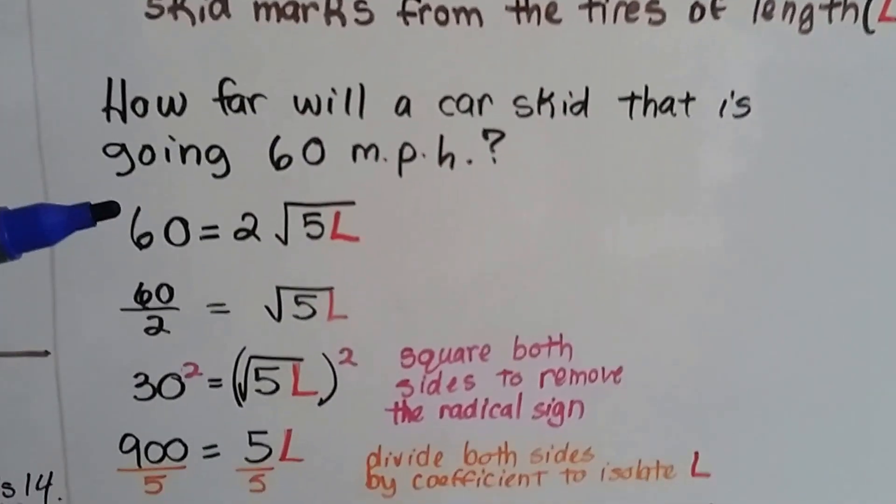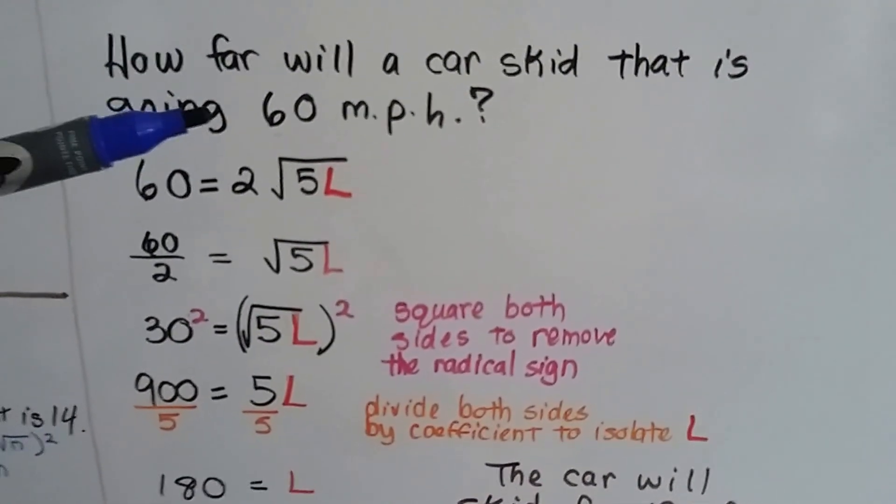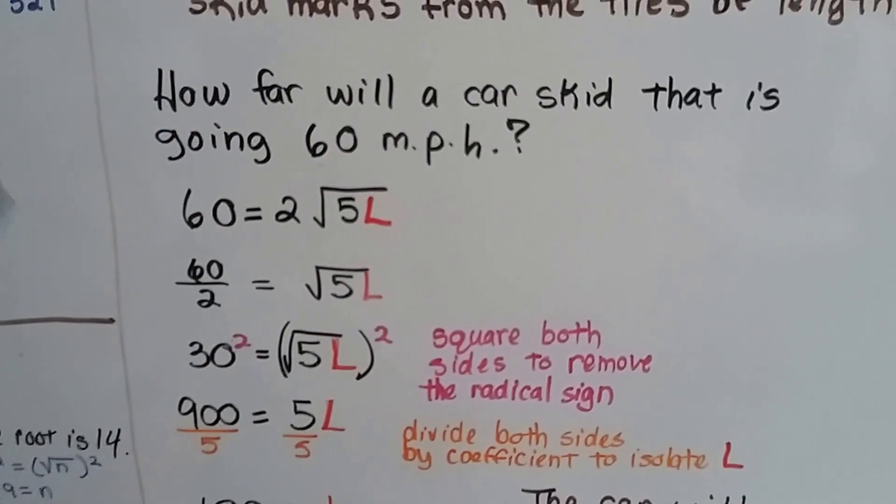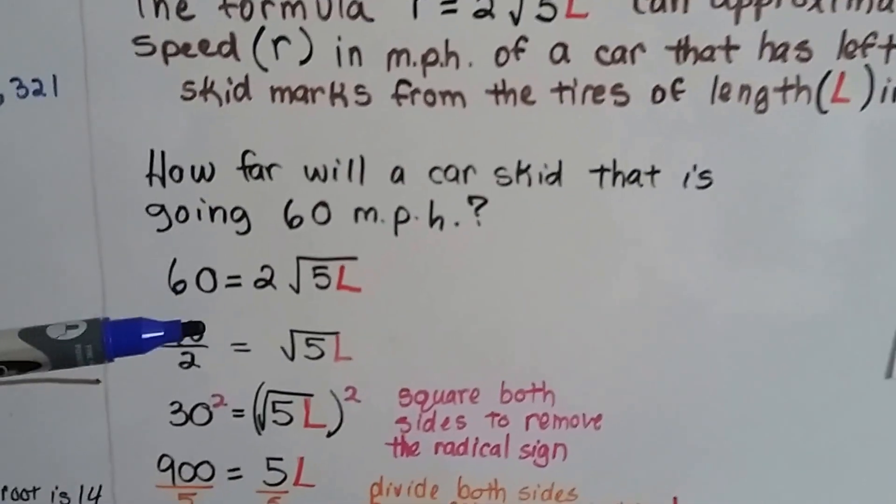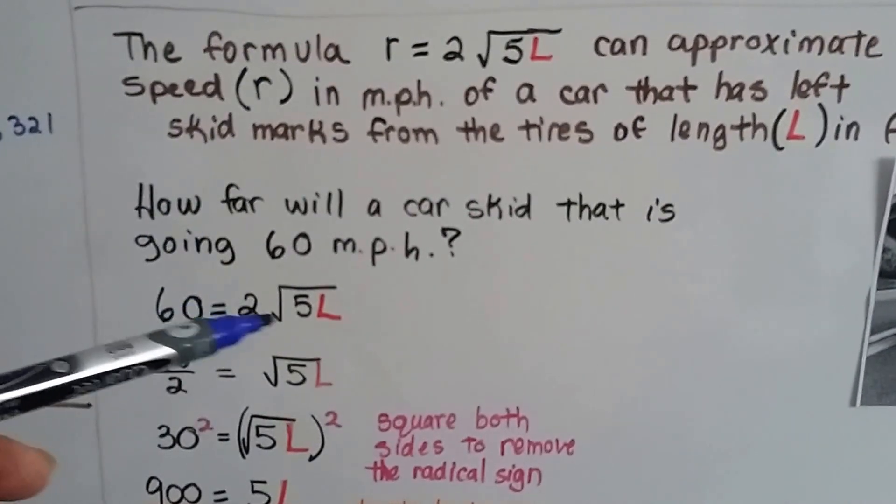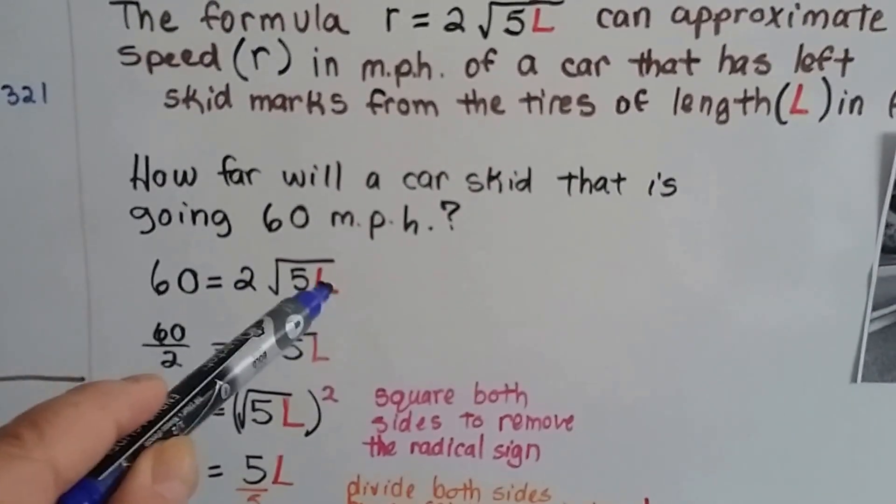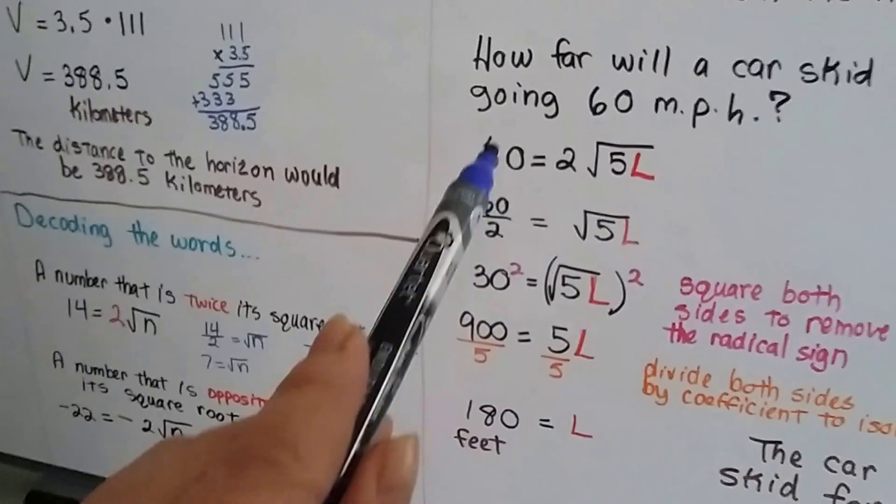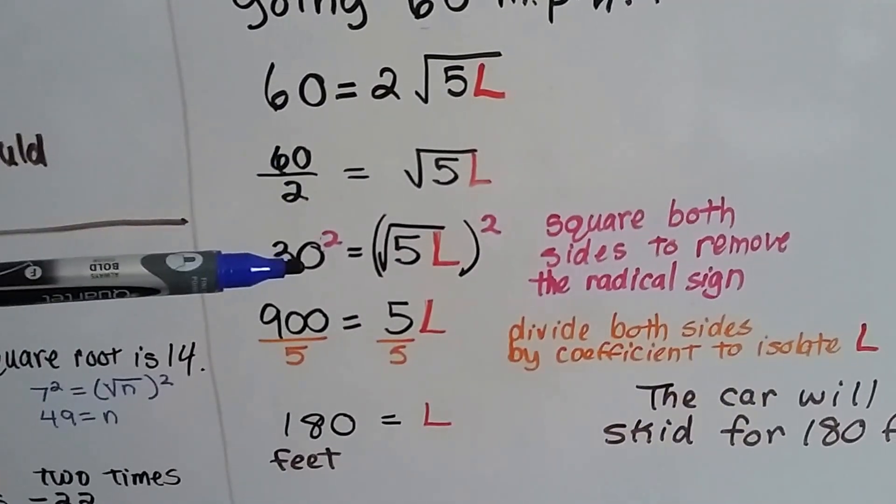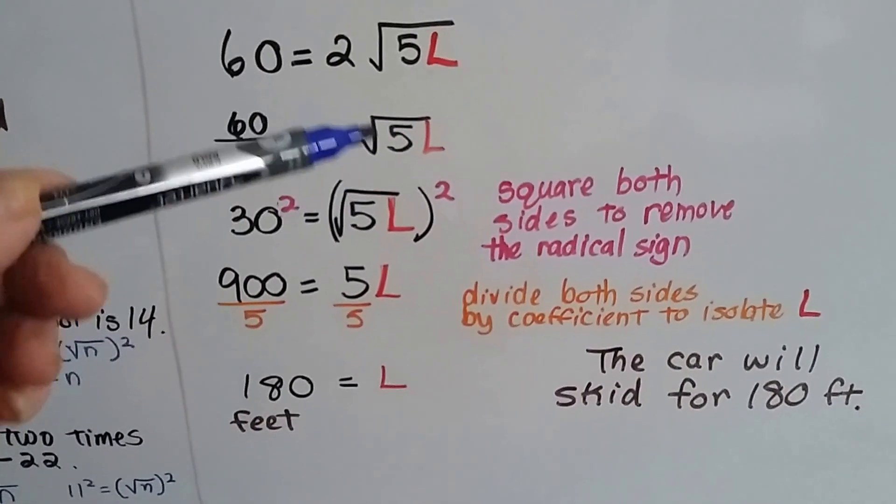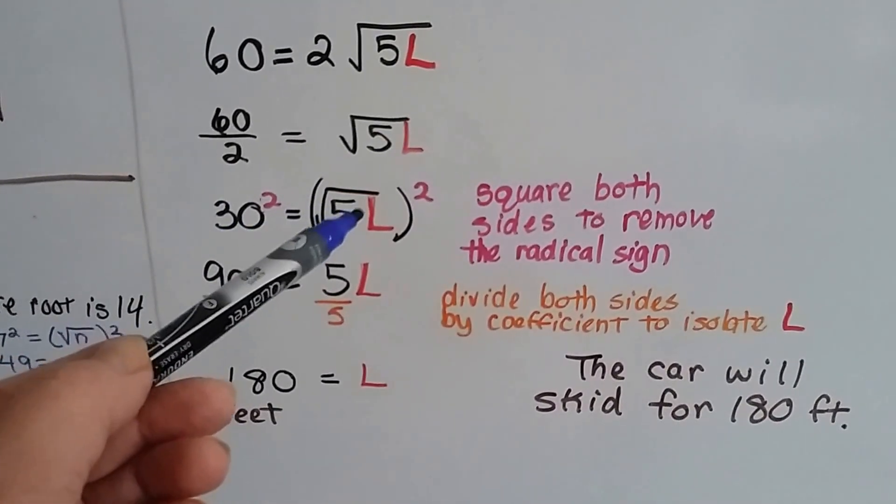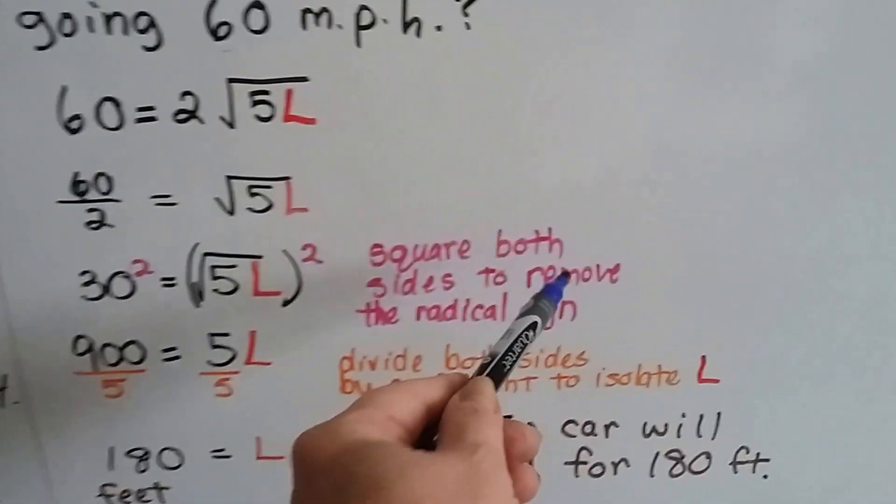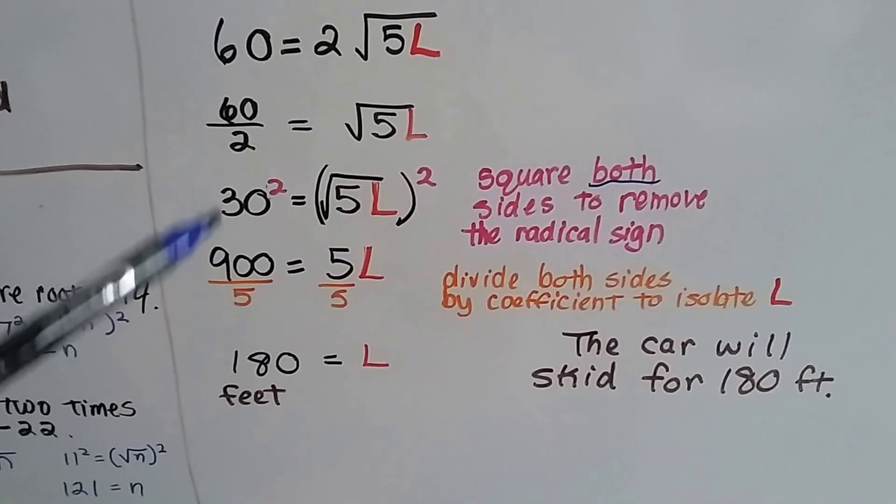How far will a car skid that's going 60 miles an hour? They slam their brakes on when they were doing 60 miles an hour, they saw something they were trying to avoid and they slam their brakes on. How far is the car going to skid before it stops? We plug in 60 for the speed for R and 2 times the square root of 5L. L is going to be the length of the skid. We do it just like we did over here. We divide by the coefficient here. 60 divided by 2 is 30. That leaves the square root of 5L on this side. We have to get rid of that radical sign, so we square both sides. Don't forget, you've got to square both sides. You can't just square this side and get rid of the radical sign. You've got to do it to this side too. It's really important that you square both sides.